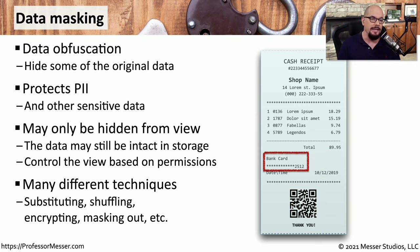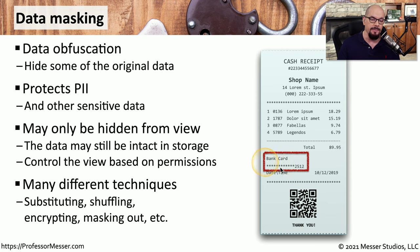There are many different techniques for masking data. You can shift data from one place to another or shuffle numbers around. Or in the case of credit card receipts, we can mask out the data with asterisks and only show the last few numbers of the credit card number.